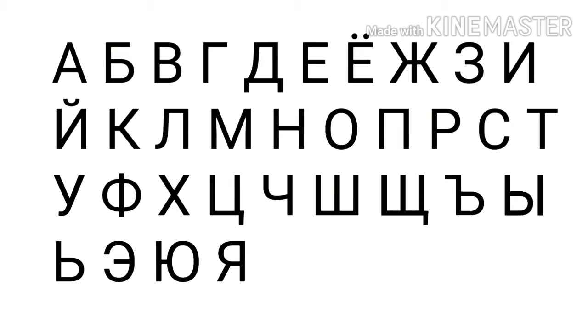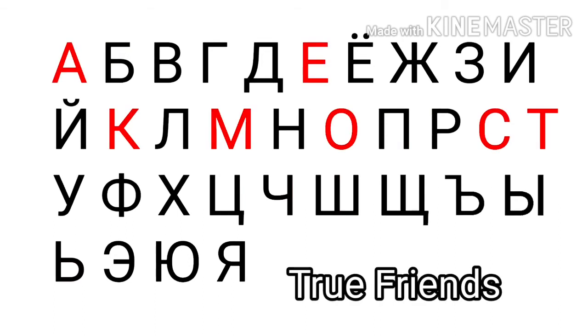The Cyrillic alphabet is divided by most people into three groups. The first one is the True Friends, which are letters borrowed from the Latin alphabet that are pronounced exactly the same.